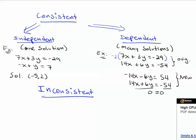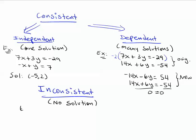An inconsistent system has no solution. An example would be something like 7x + 3y = -29 and 7x + 3y = 2.